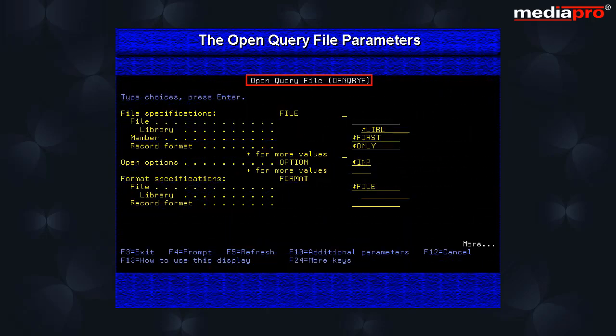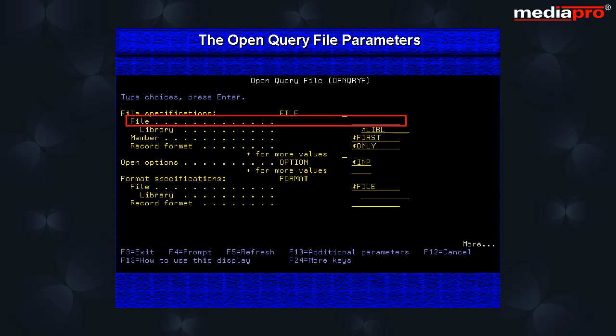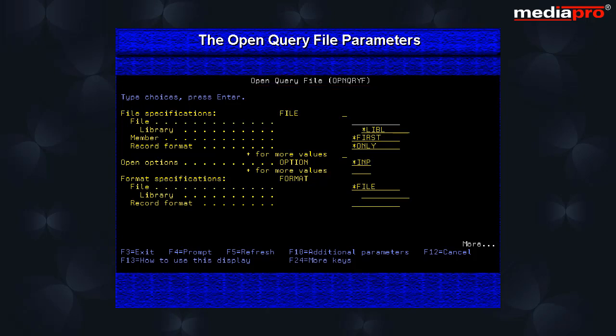Let us look at the various parameters of the open query file command. The file parameter is where we specify one or more file names that are to be processed by the open query file command. Multiple files are specified when we want to perform a dynamic join.